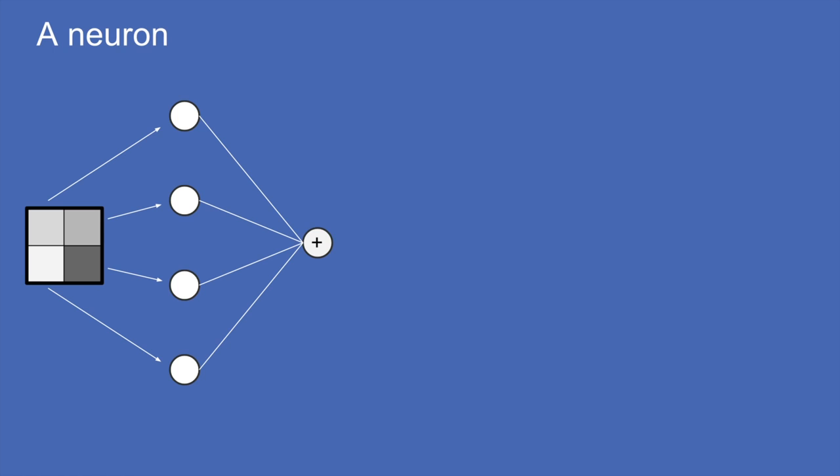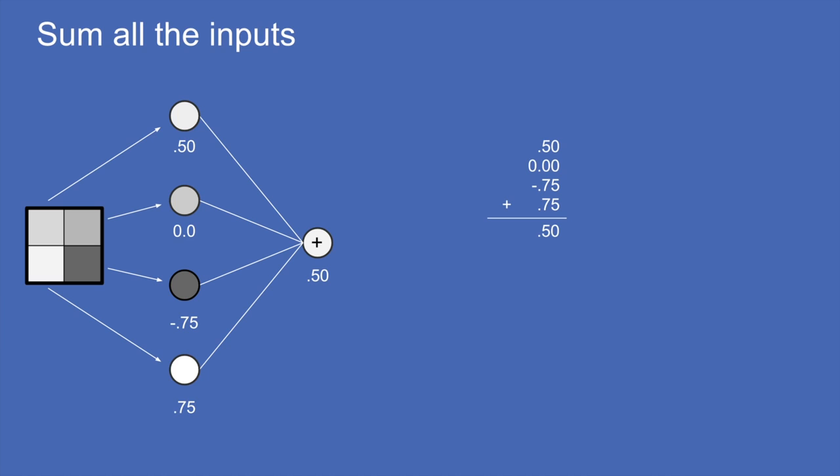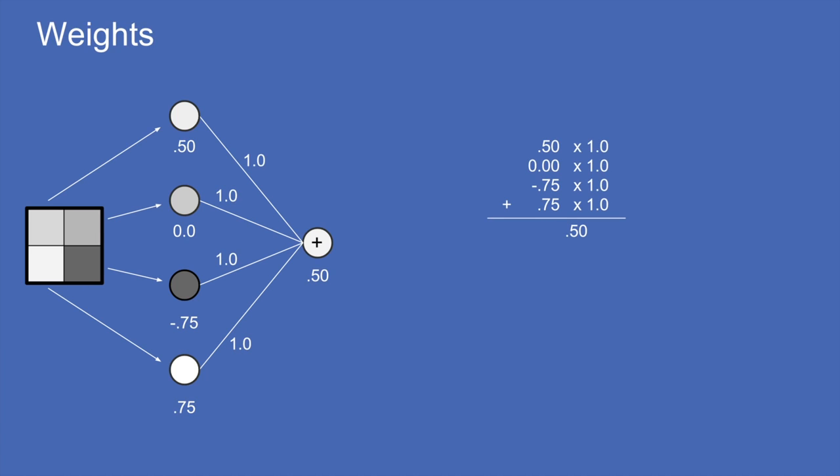To build a neural network, we create a neuron. The first thing it does is add up all of the values of the input neurons — in this case that gives us 0.5. To complicate things a little, each of the connections are weighted, meaning they're multiplied by a number. That number can be one, minus one, or anything in between. If something has a weight of minus one, you get the negative of it added in; if the weight is zero, it's effectively ignored.